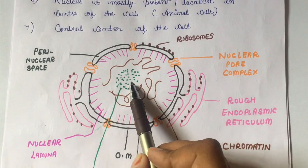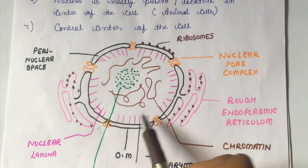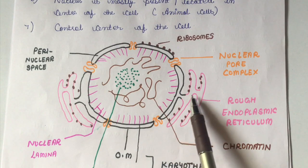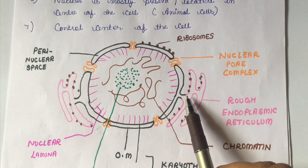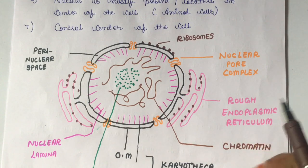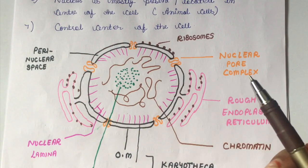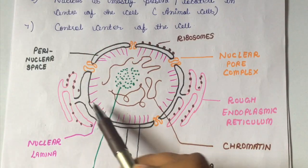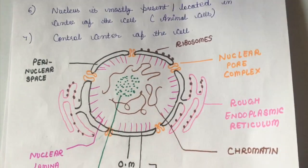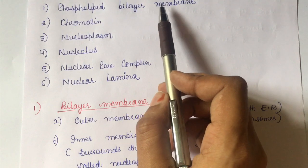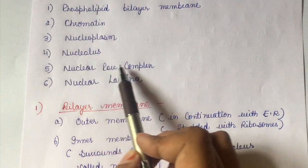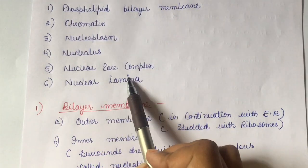The outer membrane is in continuation with the rough endoplasmic reticulum. There is also the nuclear lamina. The components of a nucleus are: the phospholipid bilayer membrane, chromatin, nucleoplasm, nucleolus, nuclear pore complex, and nuclear lamina.